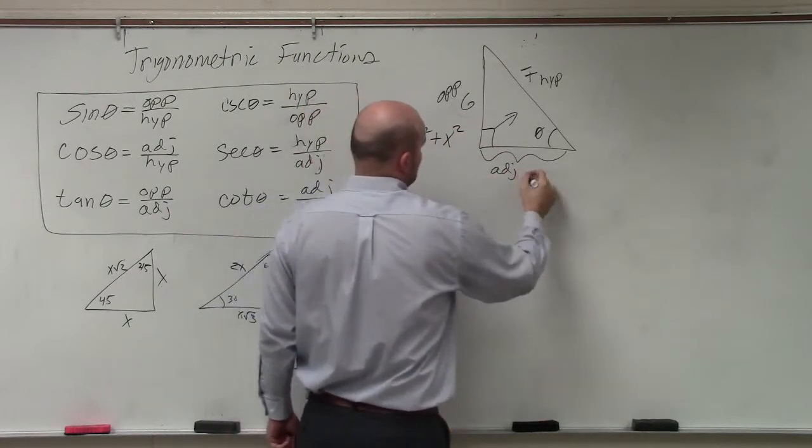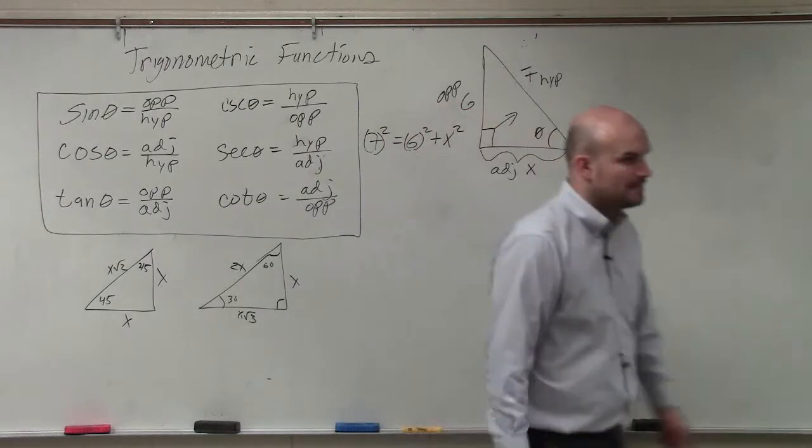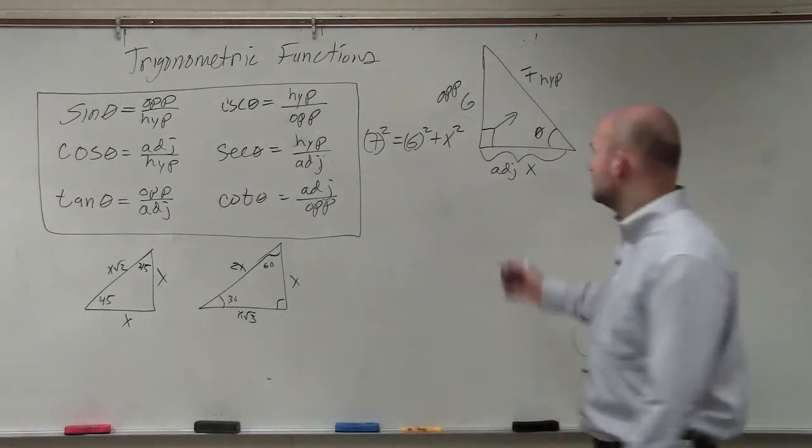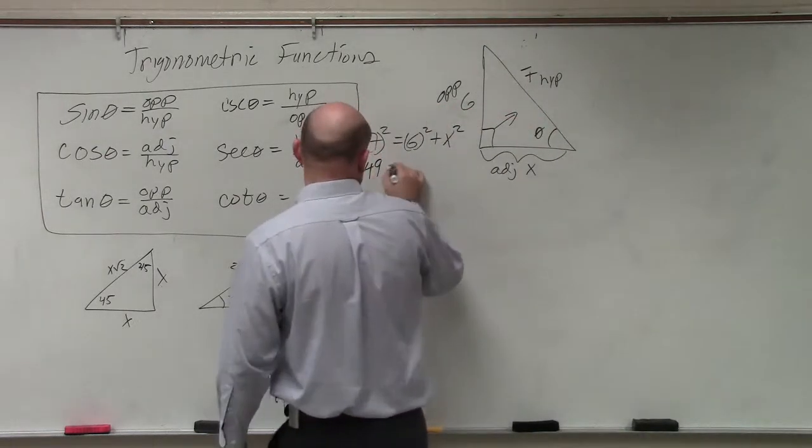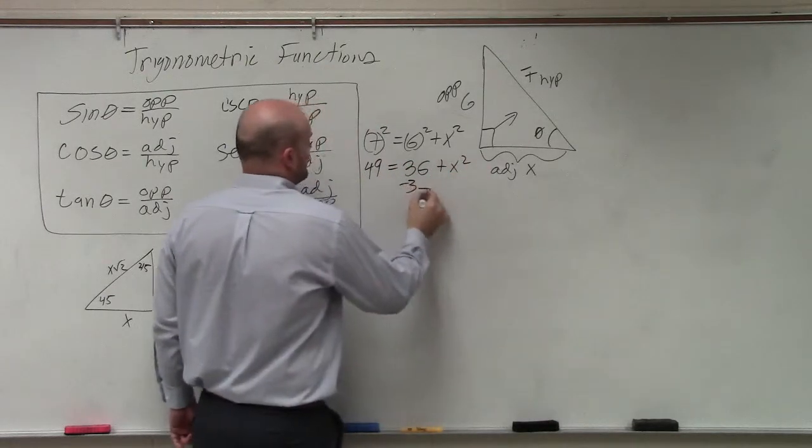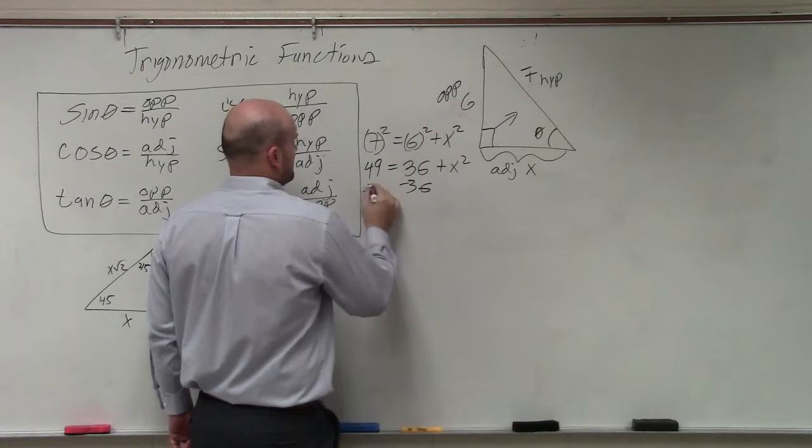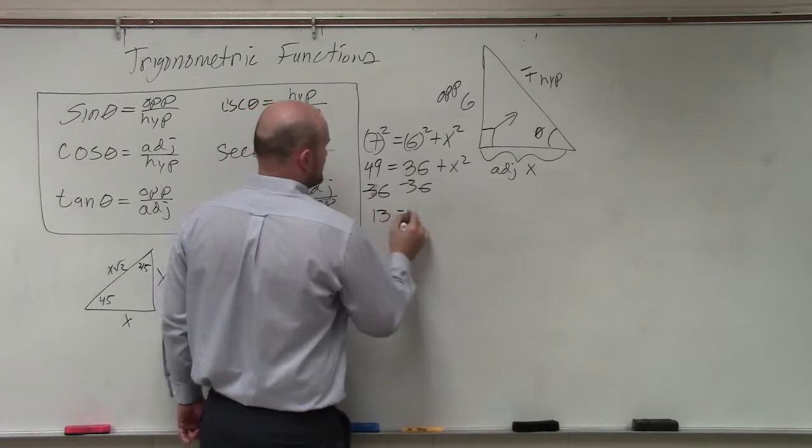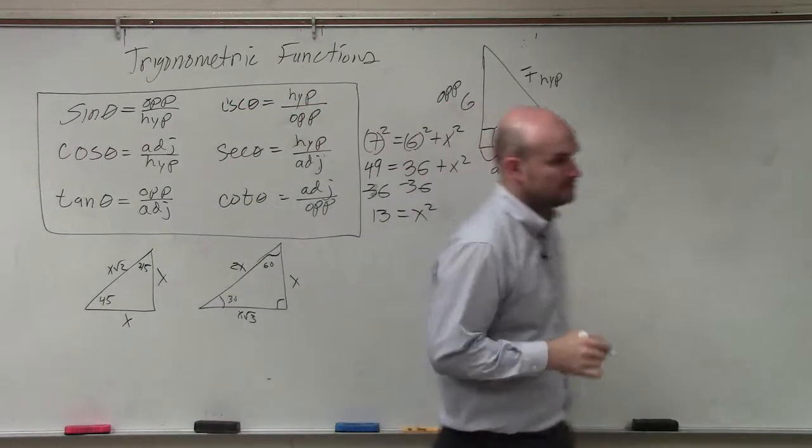x squared. OK? Does everybody agree with me, Pythagorean theorem? So that's 49 equals 36 plus x squared minus 36 minus 36. 13 equals x squared. Right?